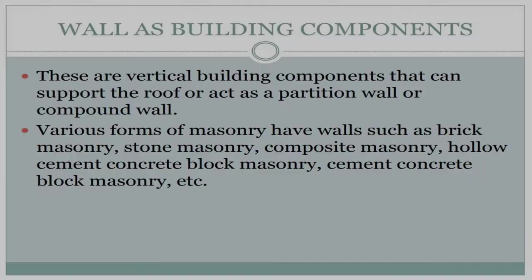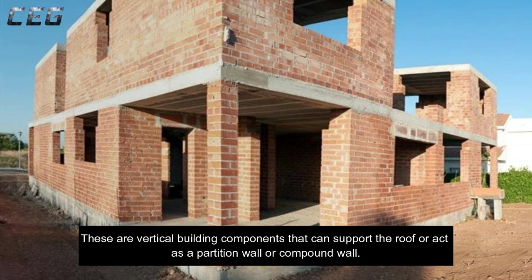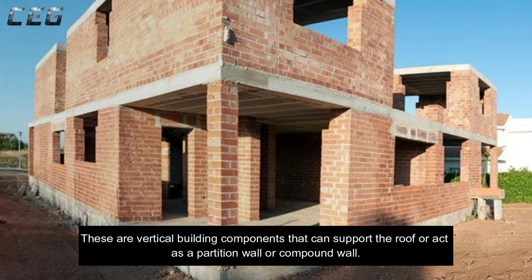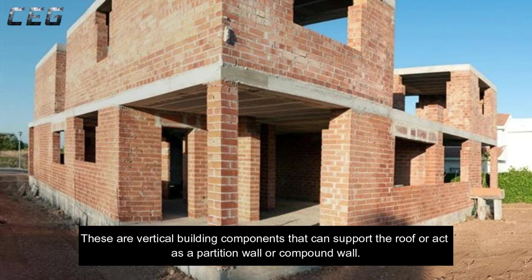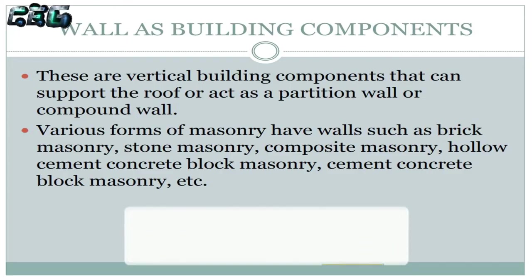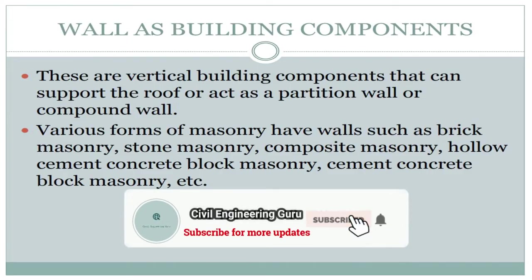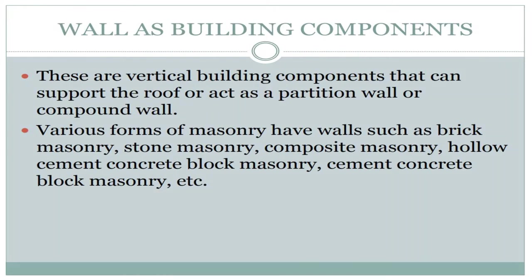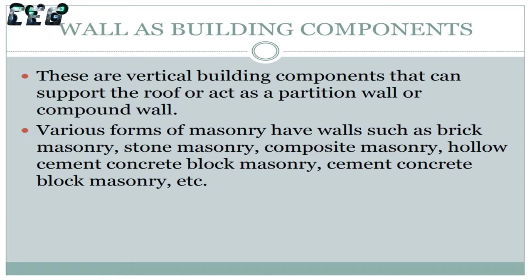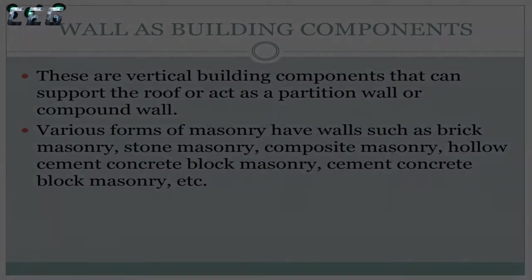Wall as building components: These are vertical building components that can support the roof or act as a partition wall or compound wall. Various forms of masonry have walls such as brick masonry, stone masonry, composite masonry, hollow cement concrete block masonry, cement concrete block masonry, etc.